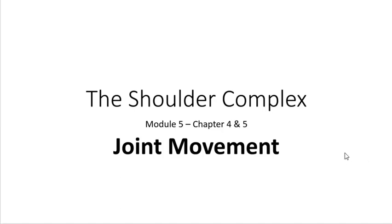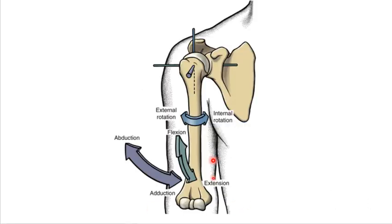This is Lecture 2 of Module 5, still looking at the shoulder complex, but we're going to look at joint movement. The glenohumeral joint — the relationship of the head of the humerus into the glenoid fossa — is a third-degree joint, and so it has movement in all three planes.